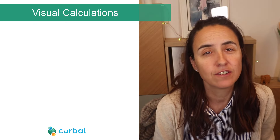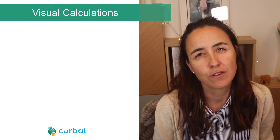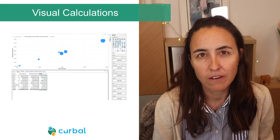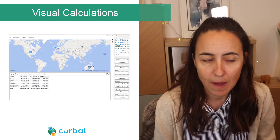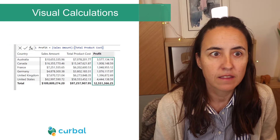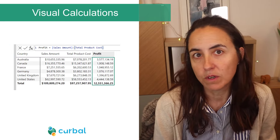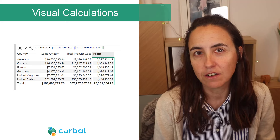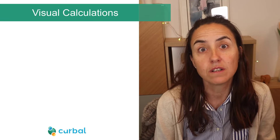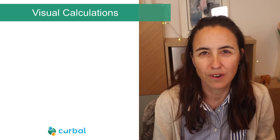There is an update on visual calculations, and now they are available for bubble charts and for maps. And if you are editing one of the visual calculation columns, it will highlight which one you're on.